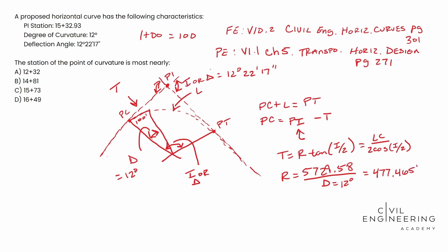So we can plug that into our T right up top there. T is equal to 477.465 times the tangent of I over two, which remember is 12 degrees, 22 minutes, and 17 seconds over two, put that in half.